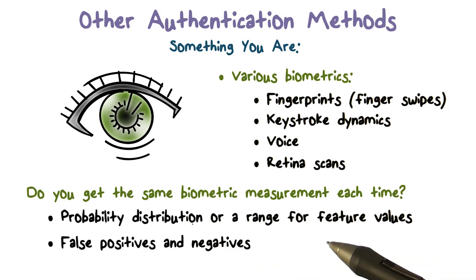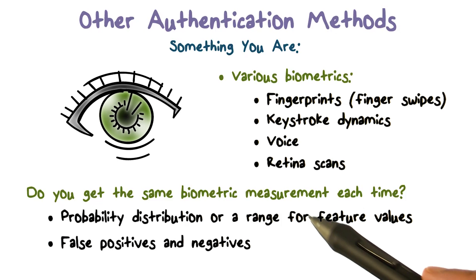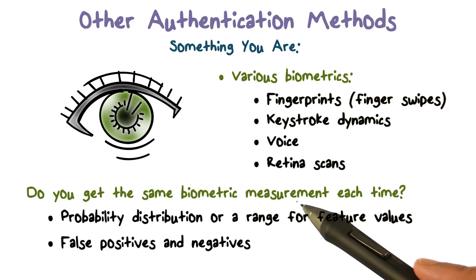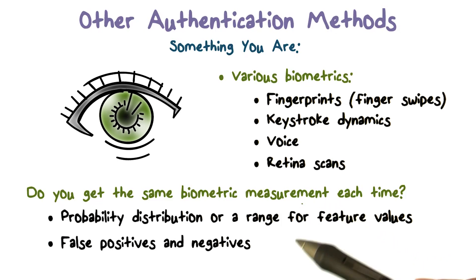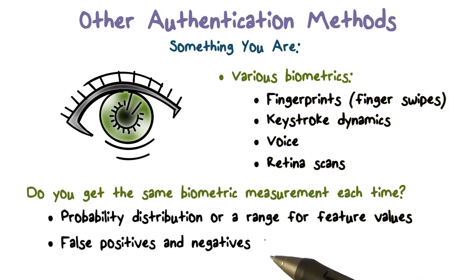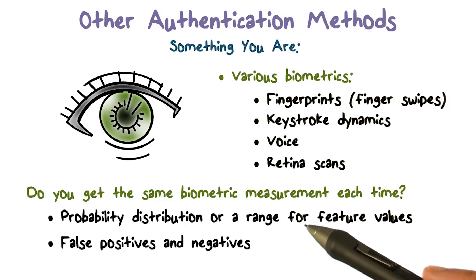So maybe you don't have exact measurements — maybe you have a probability distribution for the features that we extract from your biometric measurements. And of course, we're going to have false positives and false negatives, as we have with each authentication method we've discussed.